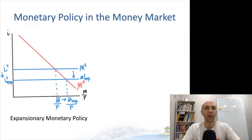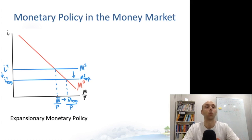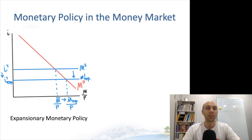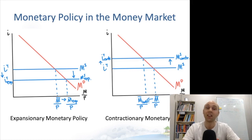In expansionary monetary policy, the RBA's aim is to lower the interest rate. It will often announce it as lowering the target cash rate — increasing the quantity of money supplied. Conditional on prices, income, and the money demand curve, that lowers the interest rate in the overnight market, which flows on to the interest rates that households and firms face every day. Contractionary monetary policy is exactly the opposite — the RBA by decreasing money supplied increases that target interest rate.